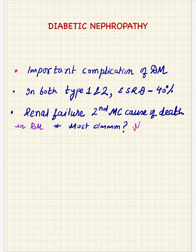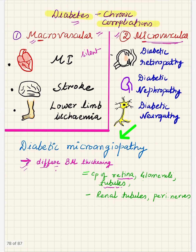The first most common cause of death in diabetics is myocardial infarction. The chronic complications of diabetes occurring due to persistent and prolonged hyperglycemia are divided into two types. The first is macrovascular complications, seen in large and medium-sized arteries including the aorta, with accelerated atherosclerosis. Examples include myocardial infarction, stroke, and lower limb ischemia manifesting clinically as gangrene.